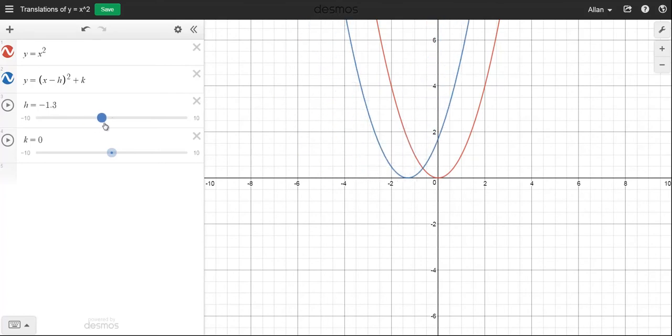Now let's go back to zero. So the k value, that's the number on the end here. So what happens to the graph?